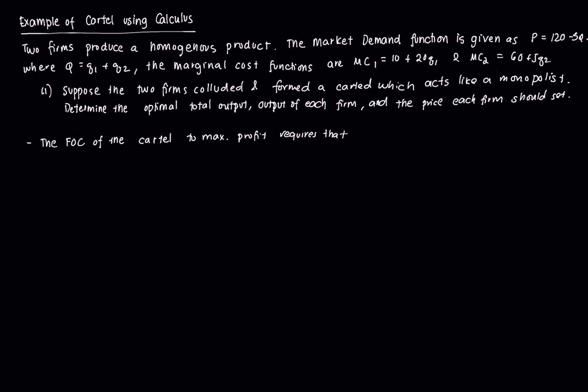Suppose firms produce a homogeneous product. The market demand function is given as P equals 120 minus 3Q, where Q is equal to Q1 plus Q2. We have a duopoly case and there are only two firms that produce that good. And each firm has a marginal cost function equal to these respectively.